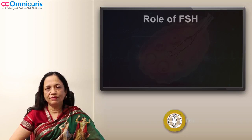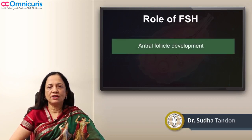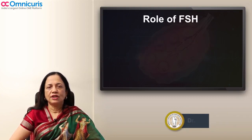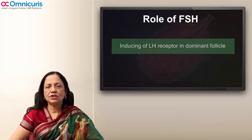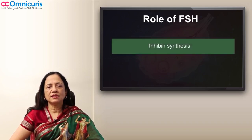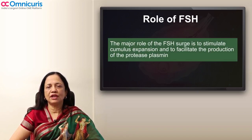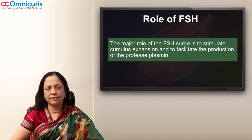So what is the role of FSH? It stimulates granulosa cell proliferation and differentiation, antral follicle development, estrogen production, inducing of LH receptors in the dominant follicle, and inhibin synthesis. The major role of the FSH surge is to stimulate cumulus expansion and facilitate the production of proteases and plasmin.